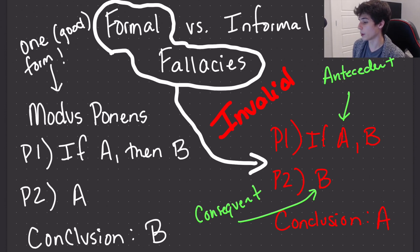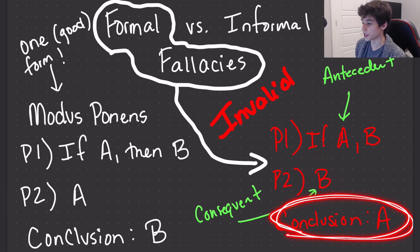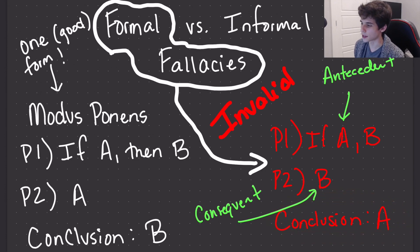So if I substitute that with propositions, it's going to look like something like this. So if some object is a plane, then that object has wings. This object has wings. Therefore, this object is a plane. Well, that's clearly false. It could have wings and be a bird.